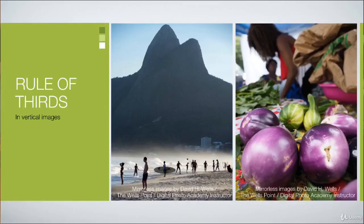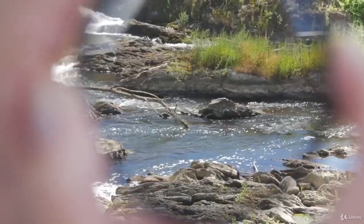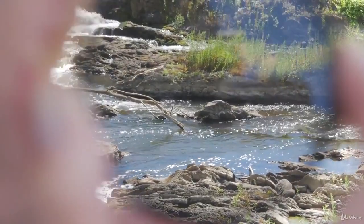There's a reason photographers use the expression 'dead center' — because when you put something in the center it tends to be static or dead. Here, for example, are a few of my images showing you how I'm using the rule of thirds. As you're taking your image, imagine that grid that we just described is inside your viewfinder.